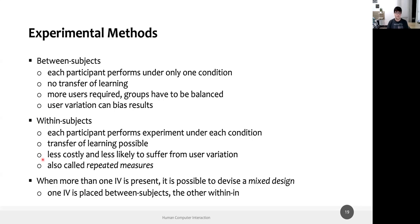The advantage of within-subject is less cost: you don't need 40 people to have 20 data points — you just need 20 people, since everybody tests everything. With two conditions you need half the people; with three conditions, one third. It's obviously less costly in terms of people to recruit, money, and time spent doing the test. It's also less likely to suffer from user variation, because the same person tries both A and B — their variation and experience is already there across both conditions.